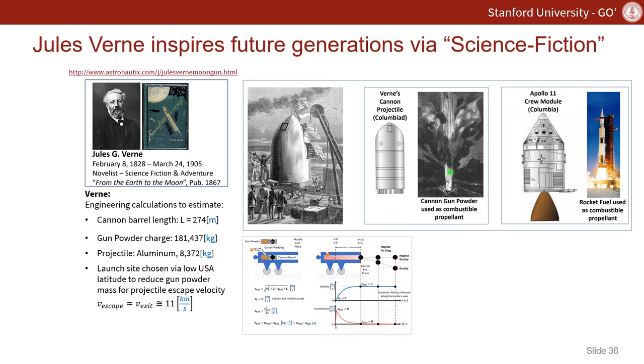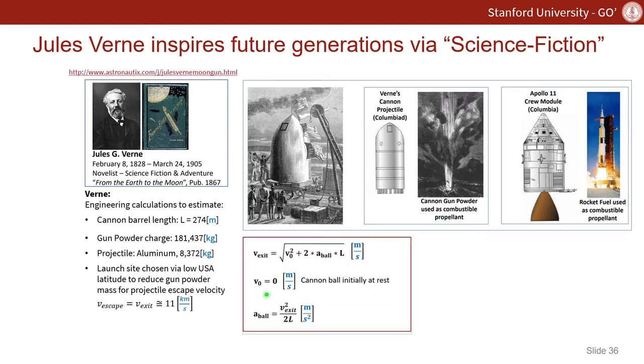In this case, it's the escape velocity that Verne has given us. Recall from those equations that the acceleration for the cannonball, or in our case the Columbia, as it leaves the cannon barrel is going to be that exit velocity squared divided by 2L. If we take the escape velocity of 11,000 meters per second, the length of the cannon barrel is 274 meters, and the acceleration given here, what we end up with is an acceleration of 220,803 meters per second squared.